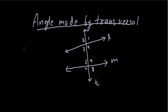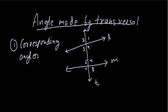There are some definitions regarding these angles. The first one is about corresponding angles. Angle 1 and angle 5 are both on the same side of the transversal — angle 1 is above line L and angle 5 is above line M. So angles 1 and 5 form corresponding angles.